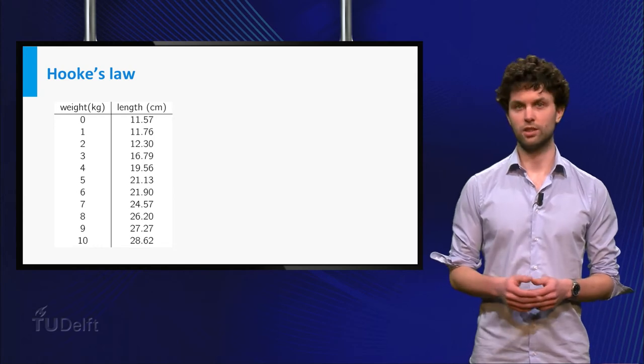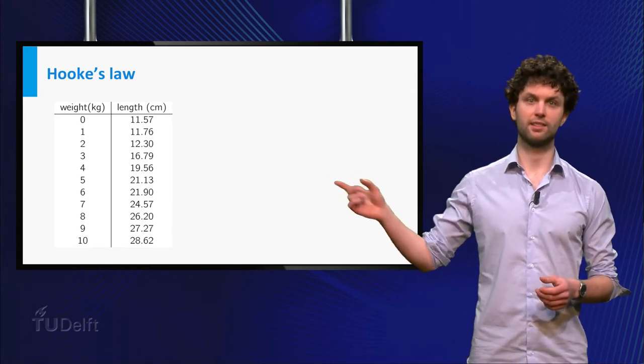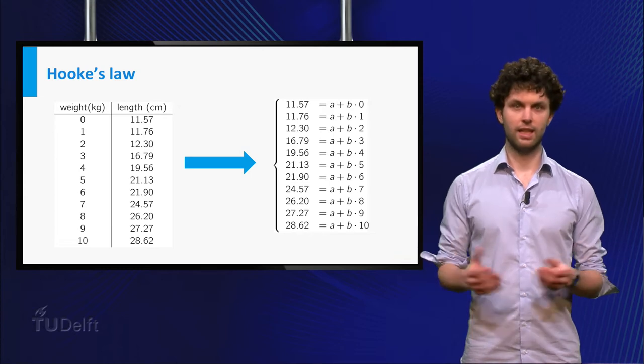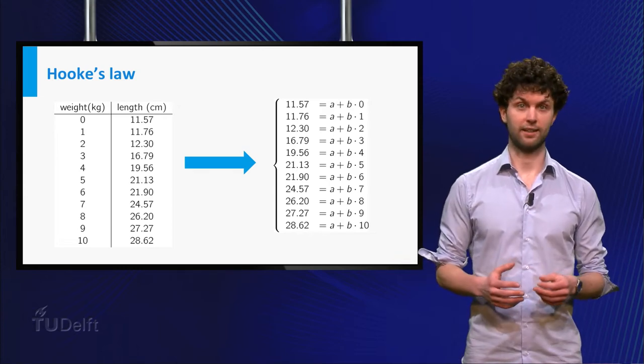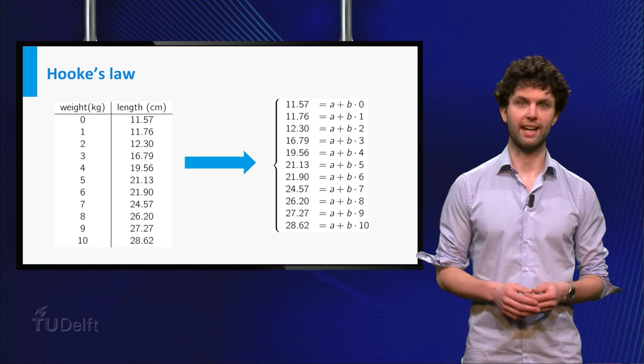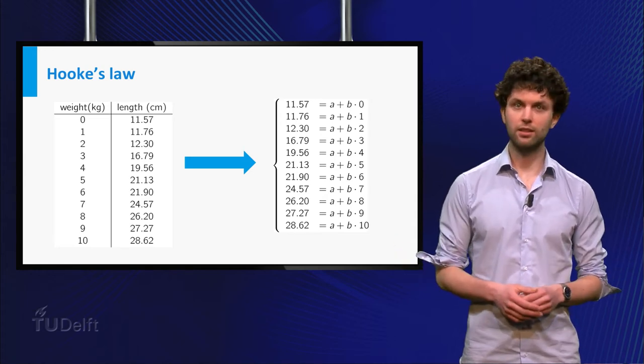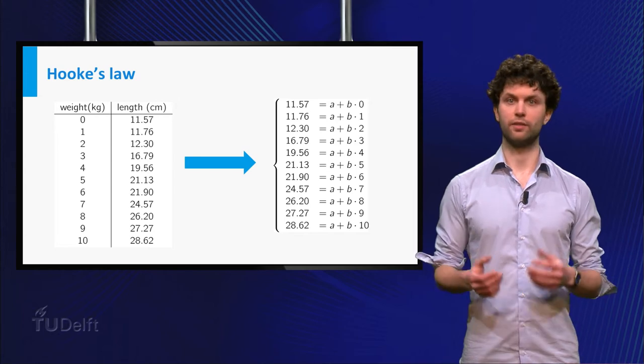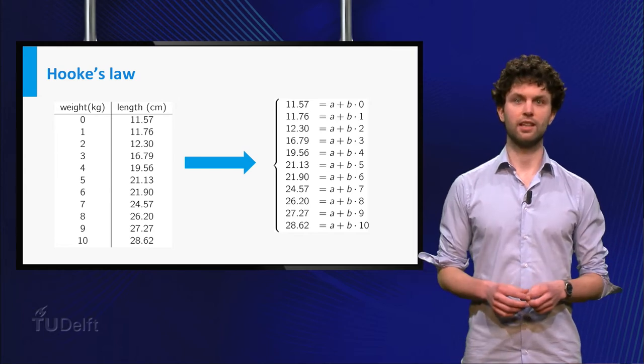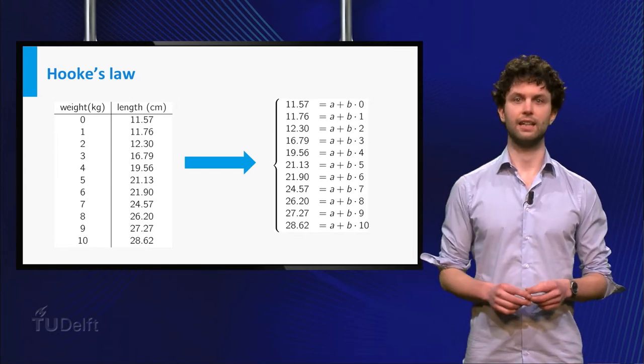Alright, so you obtained a list of 11 pairs x, y. Next, if you substitute for each pair x, y the values of x and y in the equation y is a plus bx, then you end up with a system of 11 linear equations in the two unknowns a and b.